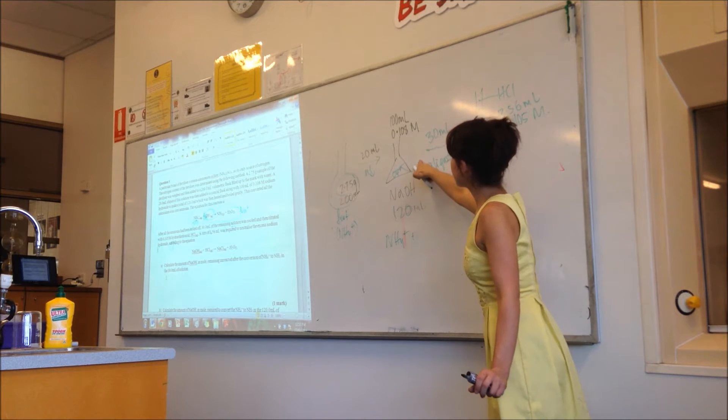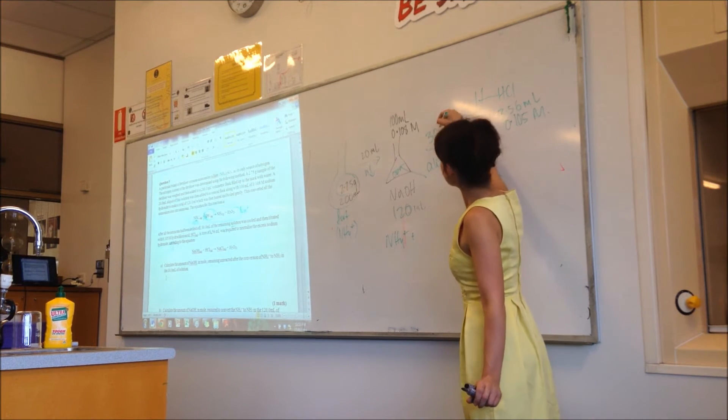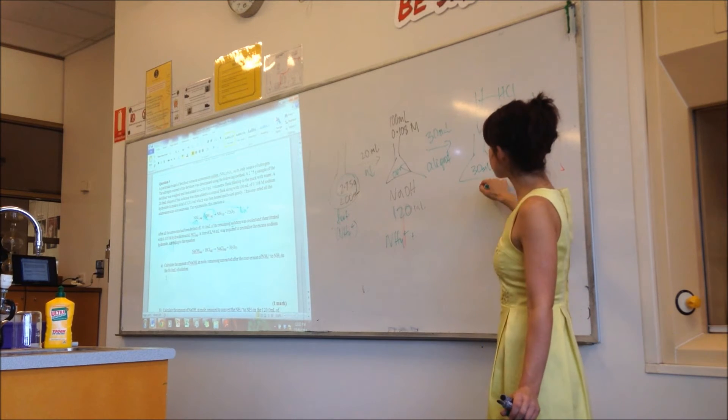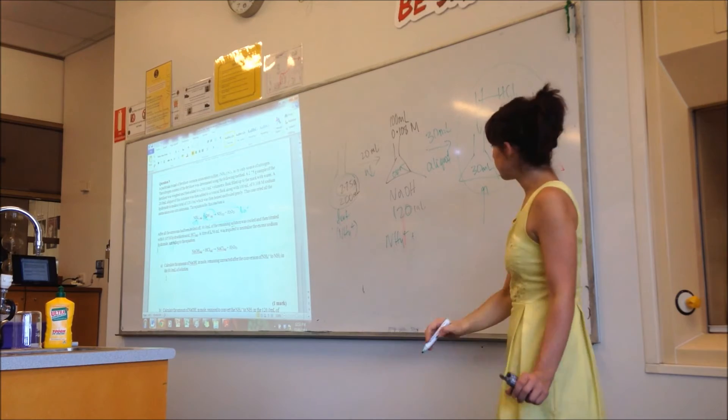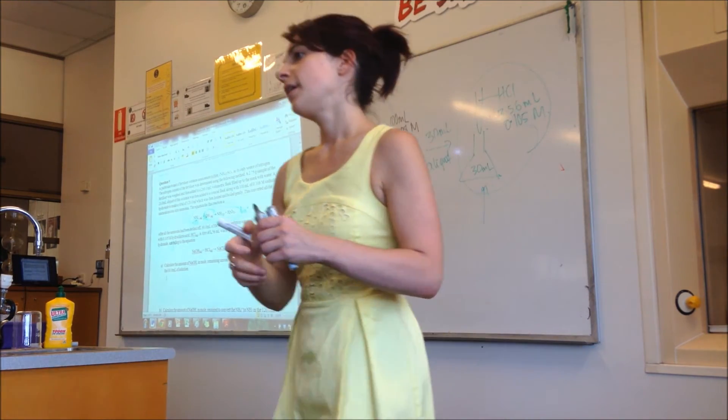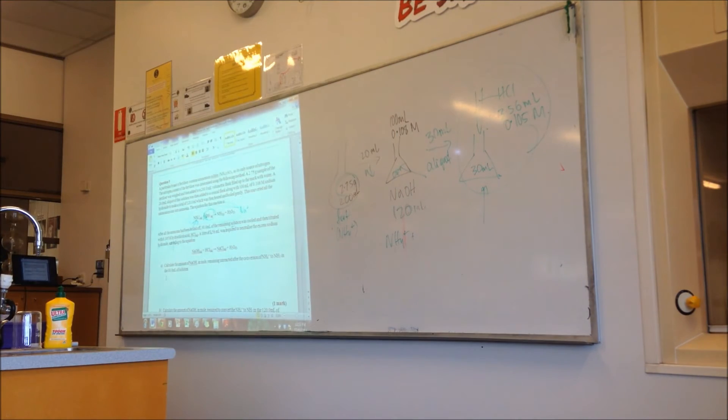Then, so we have excess NaOH in here. Then we take an aliquot of that and titrate it with HCl. So, in the end, what are we trying to look at in this step? How much HCl we've used, but more importantly, how much NaOH is in excess.